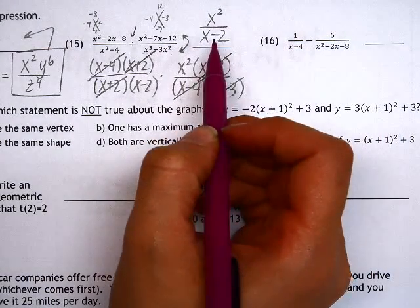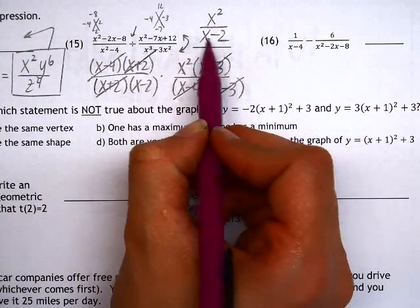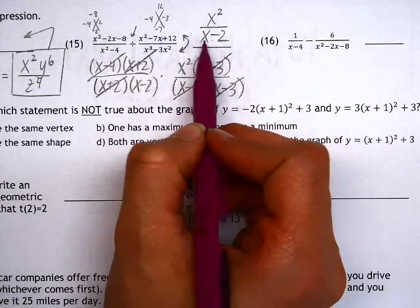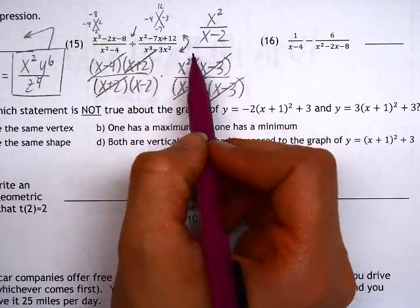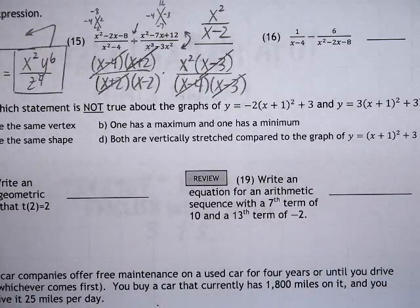It might look tempting to try to reduce this, but we have to remember when anything is linked together with a minus sign like this, we can't break it up and just cancel parts. So we're going to leave it alone like this as x² over x - 2.